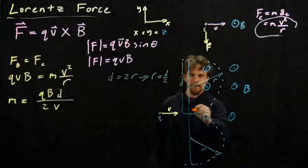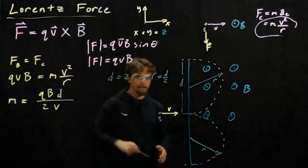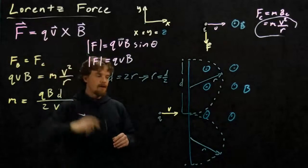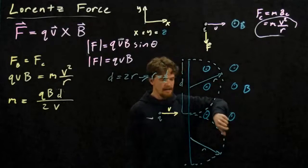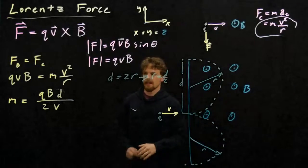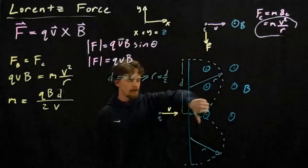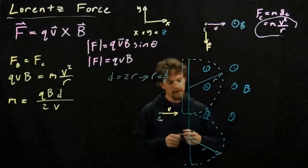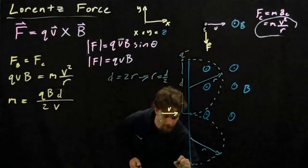The sign of q matters: if q is positive, the force acts in one perpendicular direction and the particle curves one way. If q is negative, the direction of the force flips, so the particle curves the other way. A negative particle exits on one side, and a positive particle exits on the other side — which is why we set up detection on both sides.